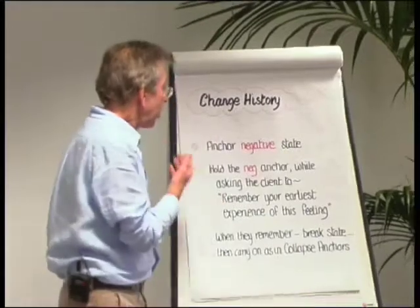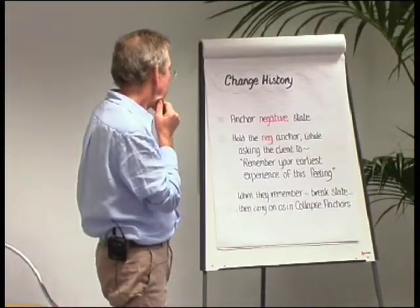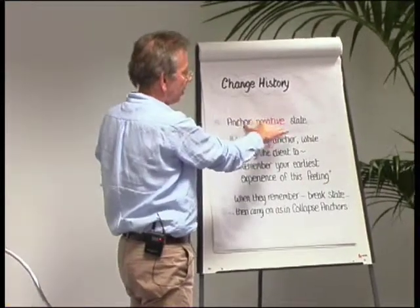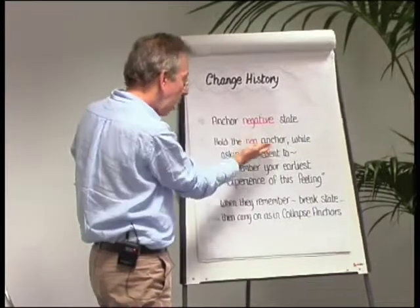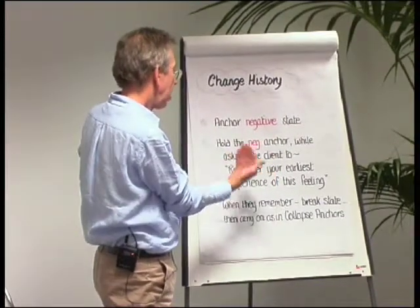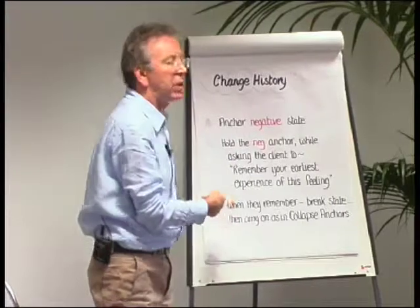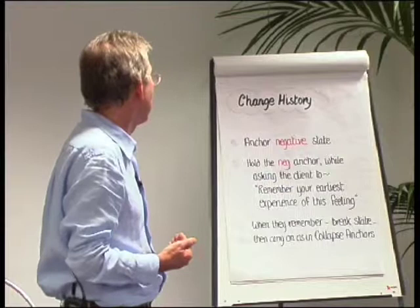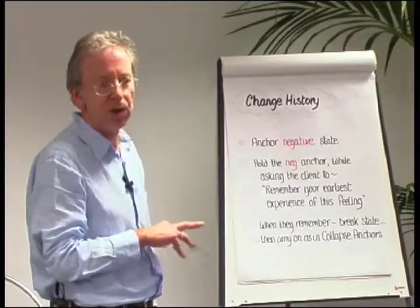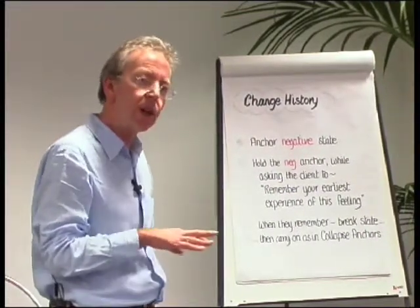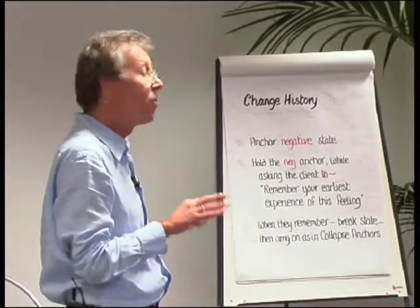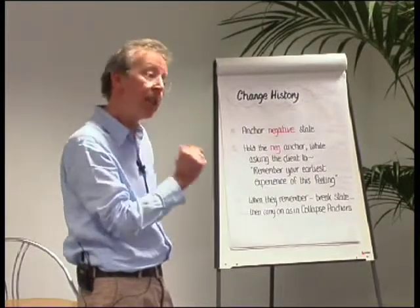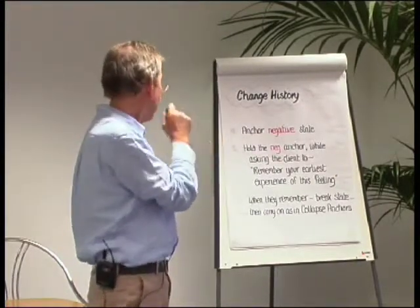It runs pretty much the same as collapse anchors, except that after you've anchored the negative state in the present, you hold the negative anchor and ask the client to remember their earliest experience of this feeling. You'll often do that with slightly Milton model words: allow yourself to drift back in time and notice even earlier memories of this particular experience — and you're holding the anchor the whole time, which makes it very easy for people to go back to memories.